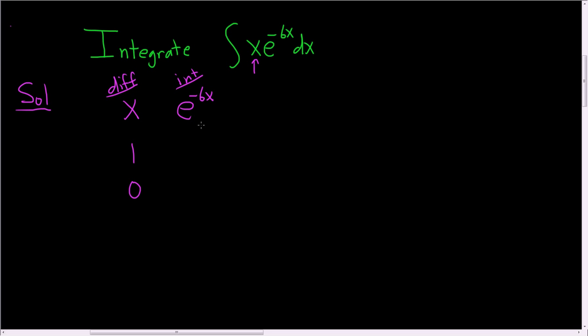Now when we're integrating e to the negative 6x, all we do is write down e to the negative 6x and then we divide by negative 6. So I'll put the 6 here and I'll put the negative out here. To integrate it, we do the same thing. We divide by negative 6 again. But negative and negative is positive, and 6 times 6 is 36.